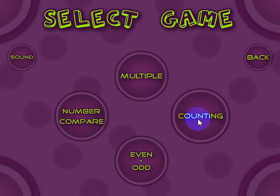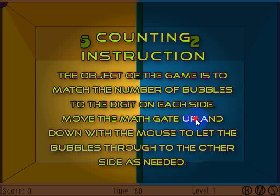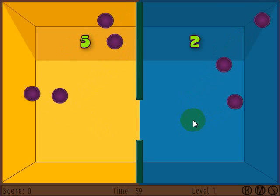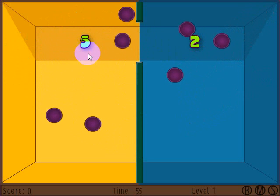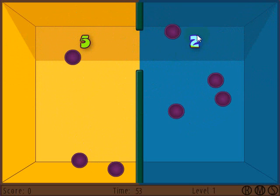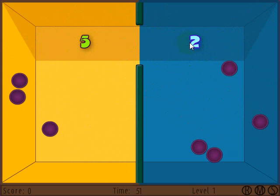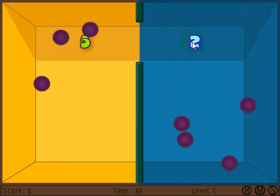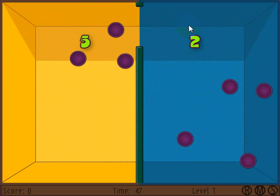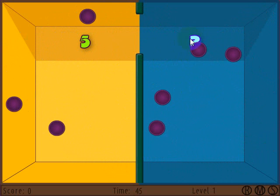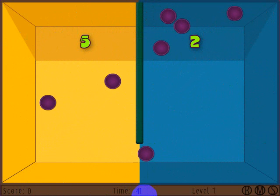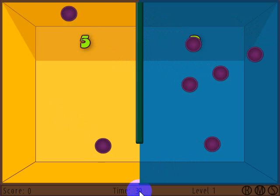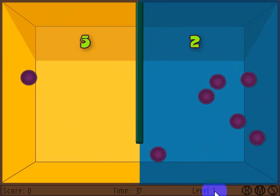Let's take a look at the counting version. The object of the game is where you have the five over here, you try to get five balls over here and then two over here. Once you do, you'll complete that level and you'll be given a new objective and new numbers. Each level will show the score down here. You'll have a time to complete the task in each level and the level number here.